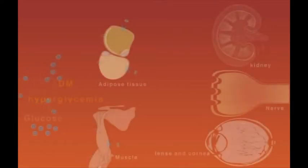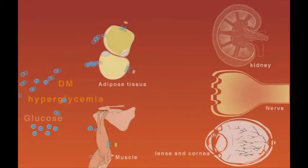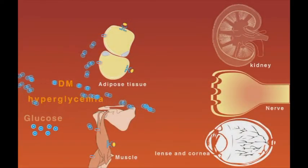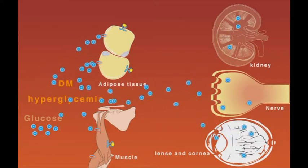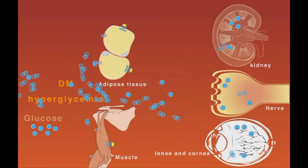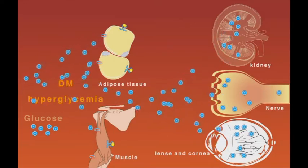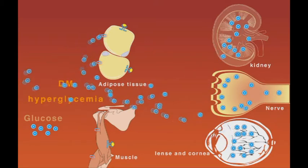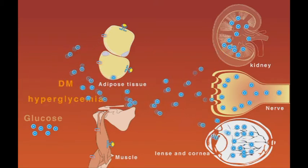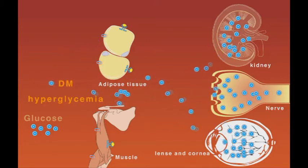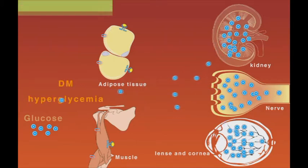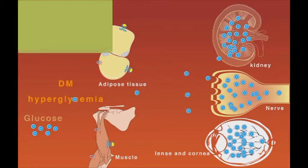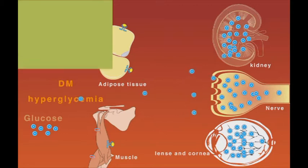When the patient becomes diabetic and hyperglycemia develops, the adipocytes and skeletal muscle cells take less and less amount of blood glucose. However, the insulin-independent cells continue to take an uncontrolled amount of glucose. As a result, these cells become flooded with a huge amount of glucose.